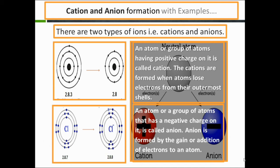The valence shell having three electrons must lose three electrons to complete its valence shell. By losing electrons, an atom or group of atoms having a positive charge on it is called a cation. Cations are formed when an atom loses electrons from their outer shell. After losing electrons, the valence shell will be considered as the second shell and the configuration will be 2 and 8 — now it is stable.